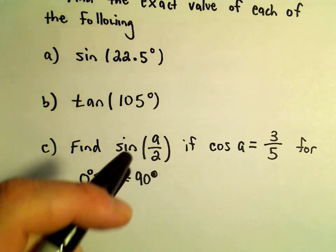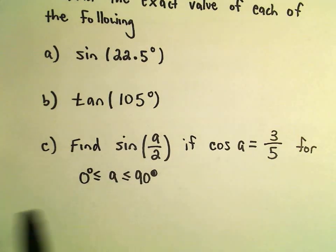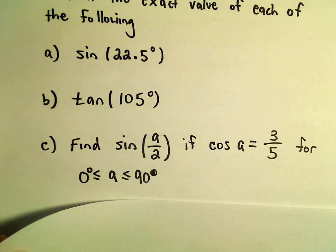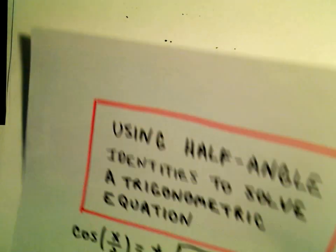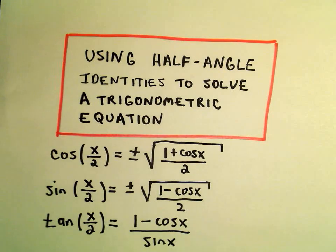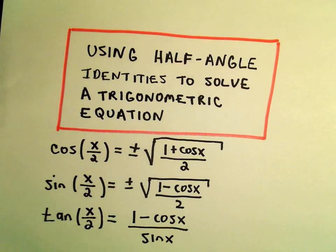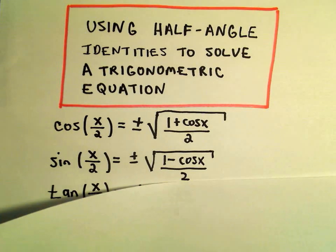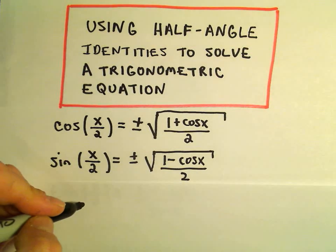So that means sine of a over 2 would be somewhere in quadrant 1. So now I'm just going to go back and use our identity. So it says for sine you either get positive or negative. Well, in this case we're going to use the positive one.